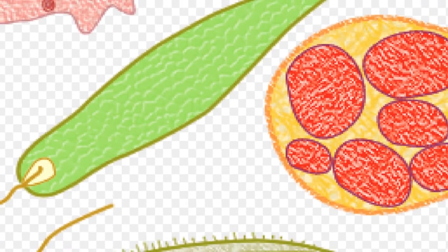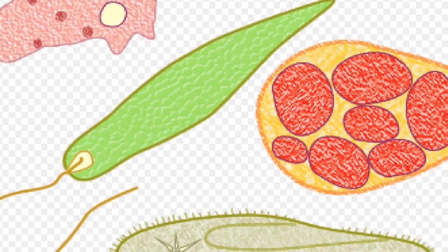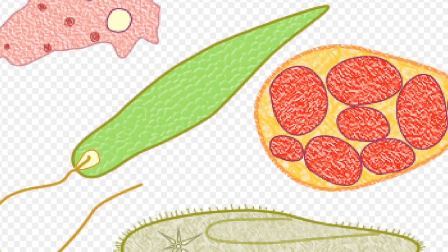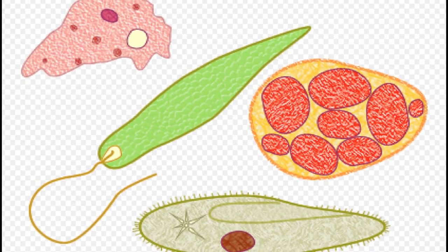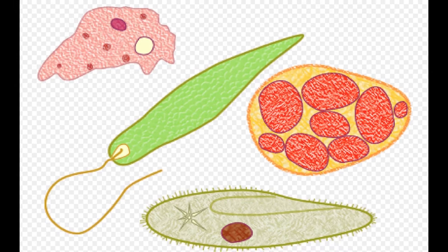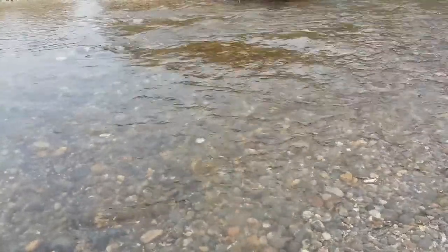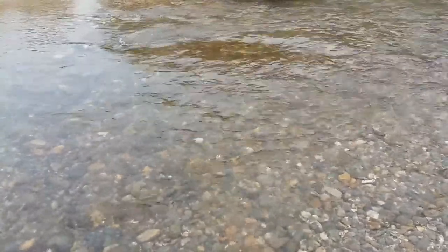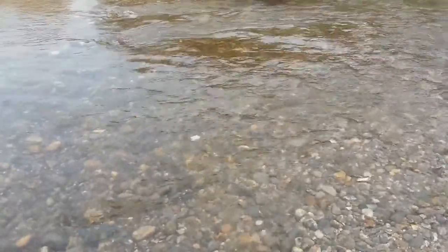Protozoa are single-celled organisms. The total number of protozoa species around the globe is estimated to be 50,000. The total number of protozoa species in Nepal is yet to be ascertained. Macroinvertebrates is the term used to describe aquatic insects, crustaceans, molluscs, and others.